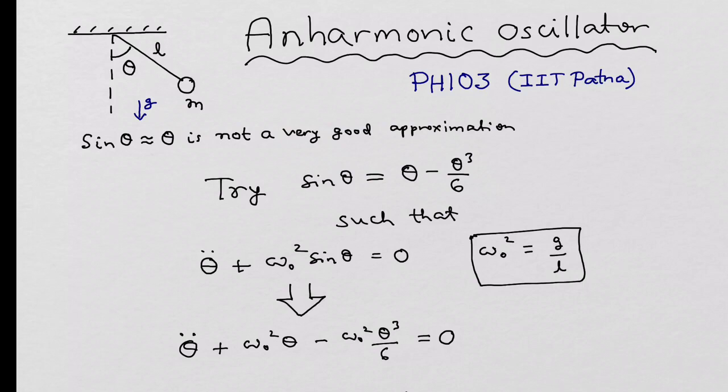goes over to a form where we have a term proportional to θ and a term proportional to θ³/6. Here please note that ω₀² = g/L where g is the acceleration due to gravity acting downwards and L is the length of the pendulum.